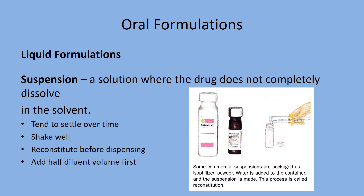Suspensions are a semi-solid dosage form — the drug is not completely dissolved. The manufacturer will supply it as a powder, and you'll need to reconstitute it before dispensing. Measure out your diluent and add only half first so there's room to shake. Then add the remaining half of the diluent and shake again. Once reconstituted, affix the expiration date, as it will have a limited shelf life.